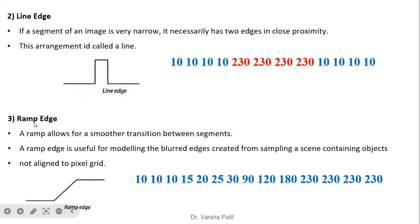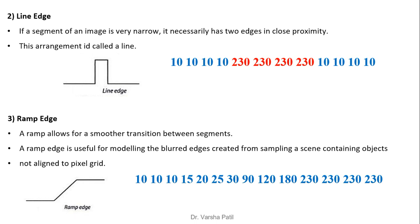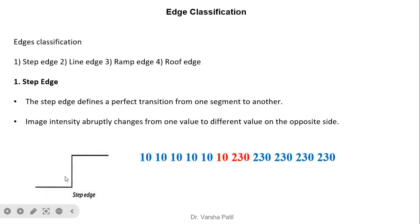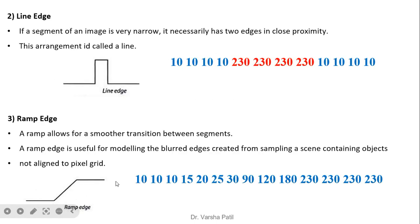A ramp edge generally appears when photos are taken with a camera. A ramp allows for a smoother transition between segments and is useful for modeling the blurred edges created from sampling a scene containing objects. Instead of an abrupt change, the intensity transitions smoothly — for example, from 10 it gradually goes to 15, 20, 25, 30, 90, and then up to the higher values.